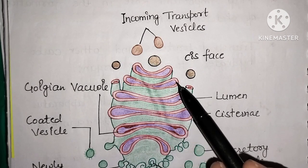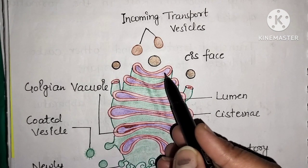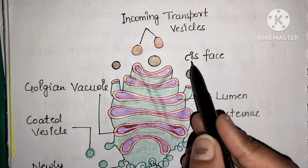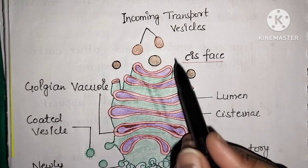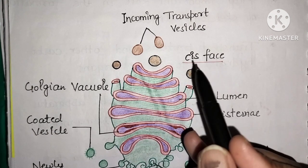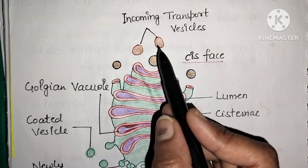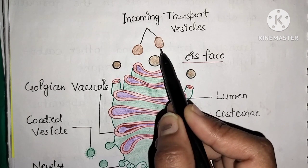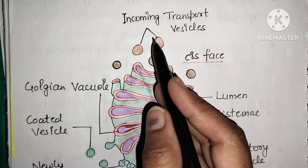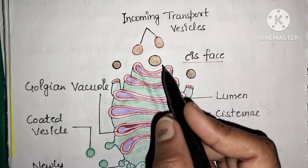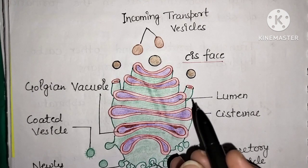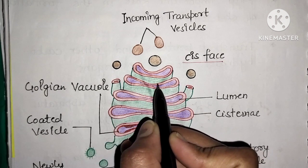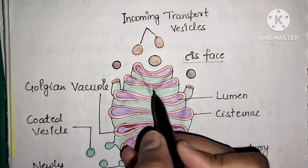This structure is the Golgi apparatus. The upper face we call the cis face, and the lower face we call the trans face. The cis face receives vesicles from the endoplasmic reticulum — it receives the proteins sent by the endoplasmic reticulum and processes them further in the flat stacked structure.